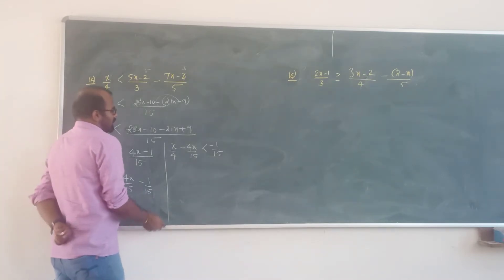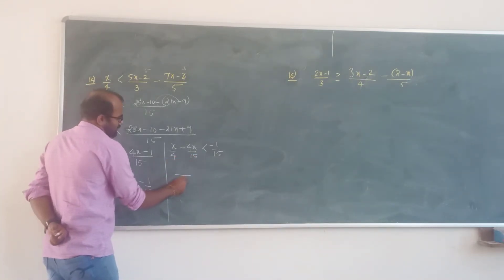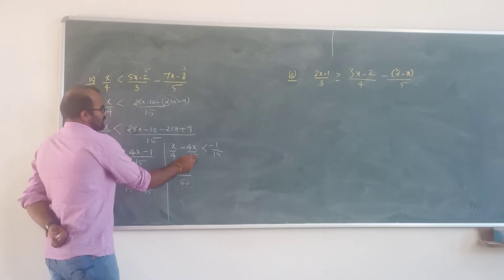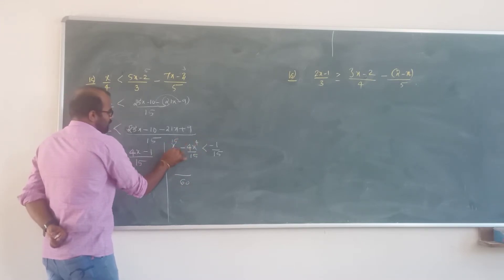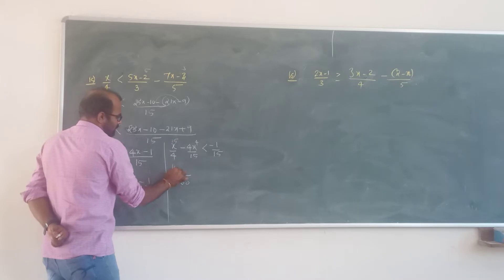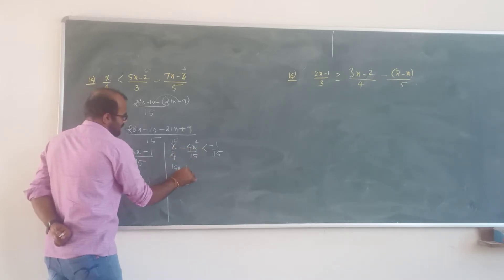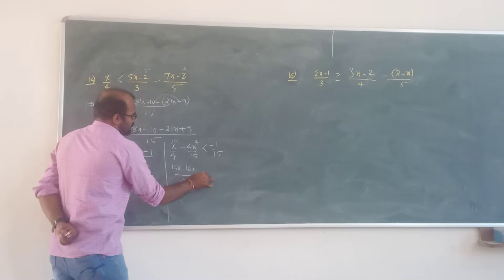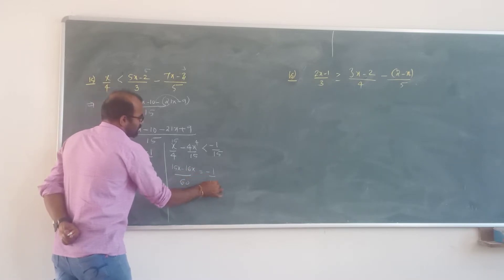So, LCM of 4 and 15 is less than — LCM is 60. 15 into x is 15x. 4 into 4x is 16x. Divided by 60, less than minus 1 upon 15.